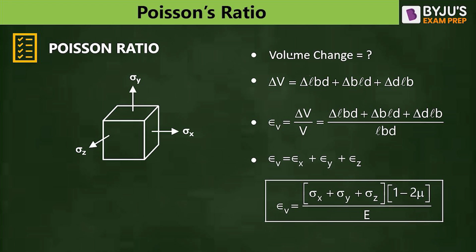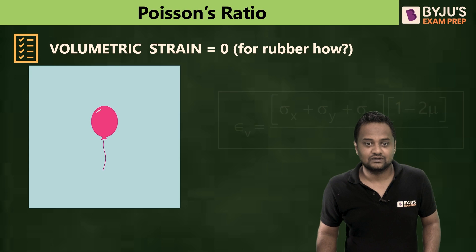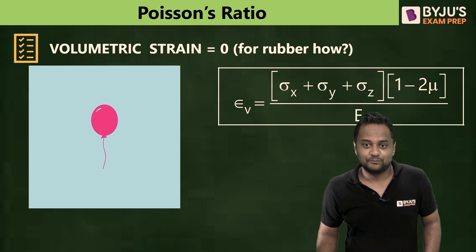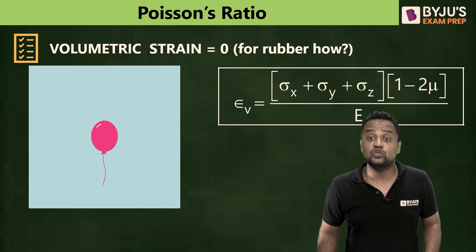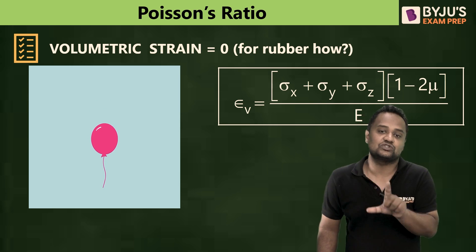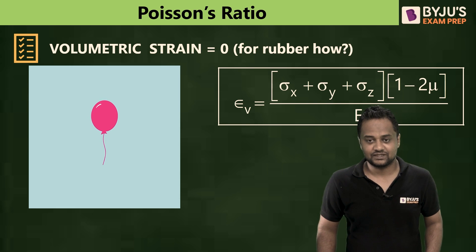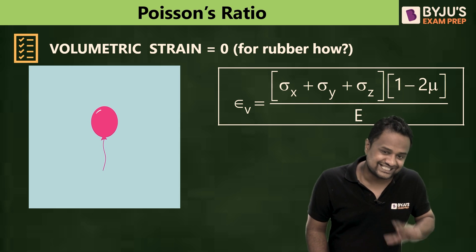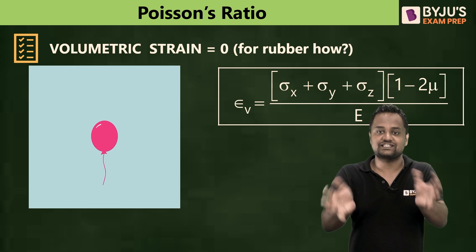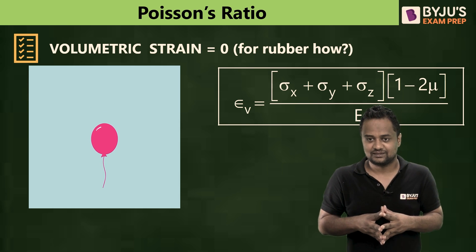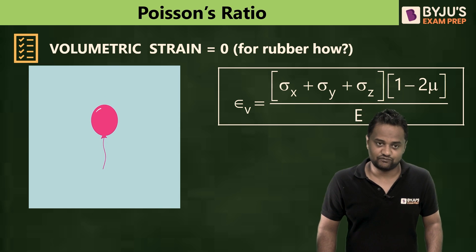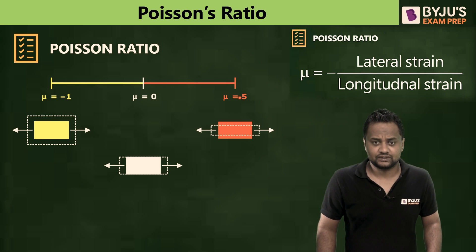If you apply μ = 0.5 in the volumetric strain expression, the volume change becomes zero. Think of a rubber balloon filled with air — the volume of the rubber material itself is not changing. When you fill the balloon, the surface area increases but the thickness of the rubber decreases, so the volume of the rubber material remains constant. The formula is for the volume of the material, not the inside space.